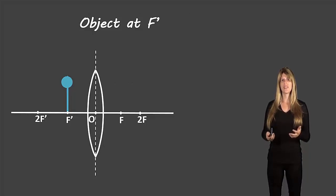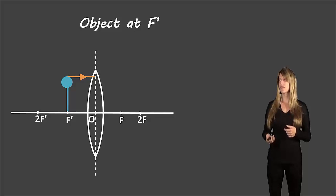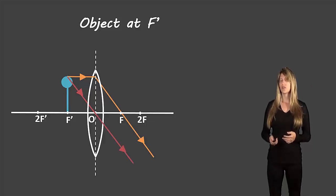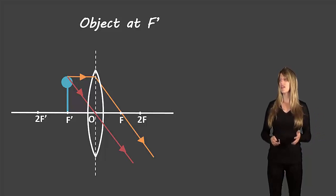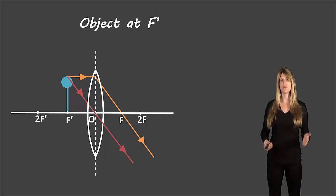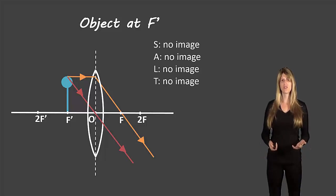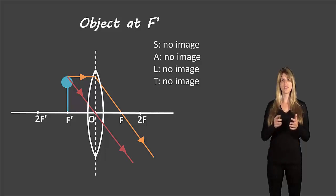Let's take a look at the example when the object is at f prime. Our first rule is that an incident light ray traveling parallel to the principal axis will refract through f — the same as the first rule we saw before. The second rule: an incident light ray traveling through the optical center will continue on in the same direction. What's different here is that our refracted rays are parallel to each other, which means they will never cross. Since the image forms where rays cross, if they never cross, there will never be an image. Any time the original object is at f prime, there will never be an image.